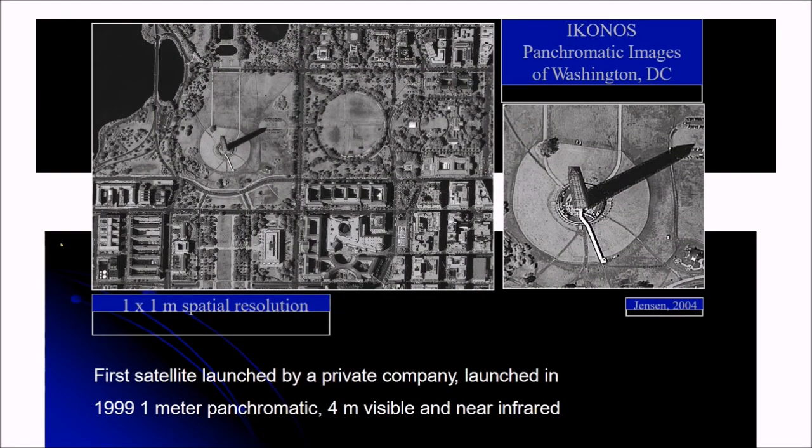This is the IKONOS, the first path breaking satellite with 1 meter spatial resolution. The first satellite launched by a private company. Launched in 1999 but 1 meter panchromatic and 4 meter visible and near infrared resolution.